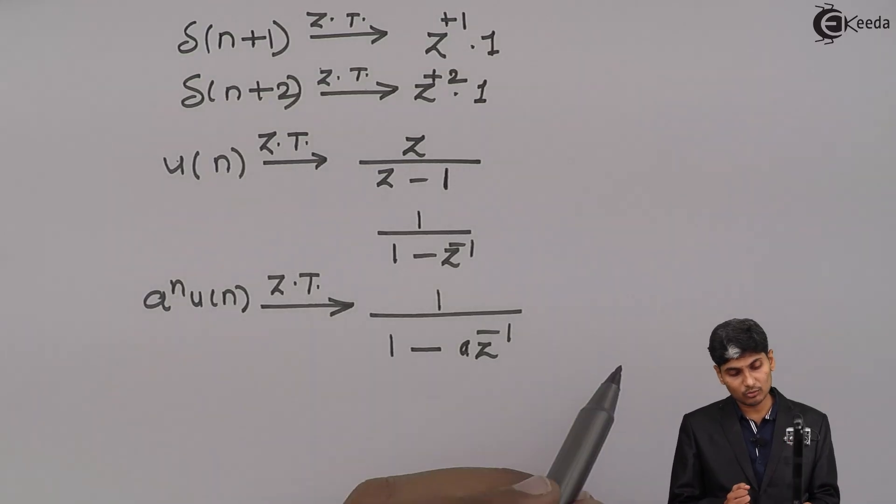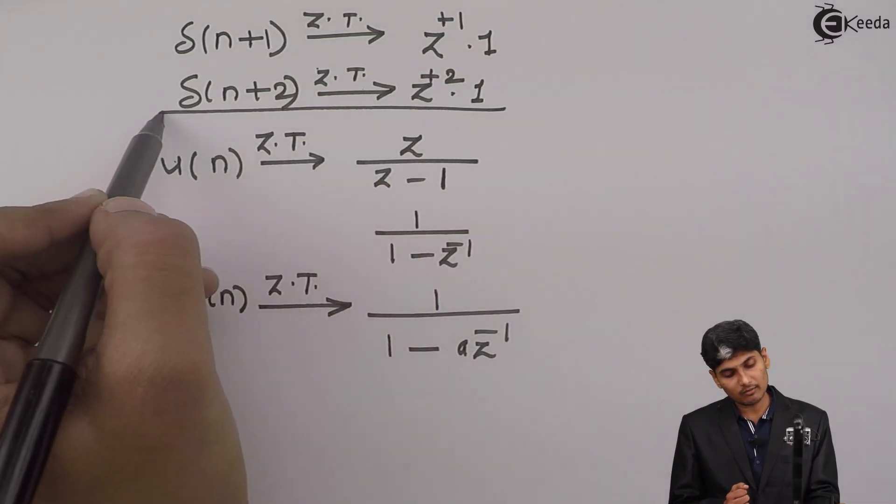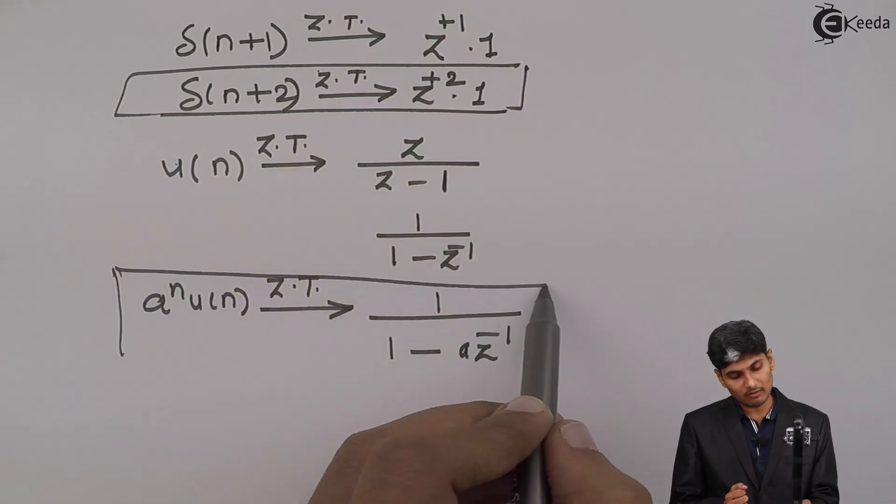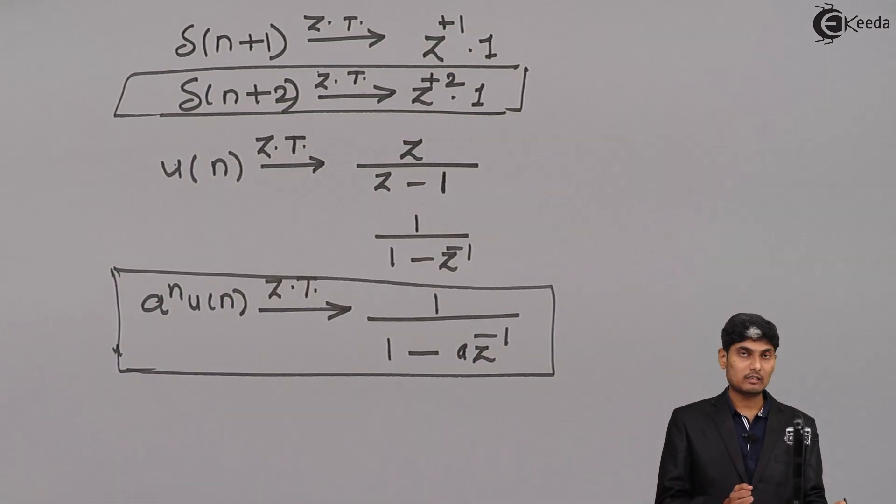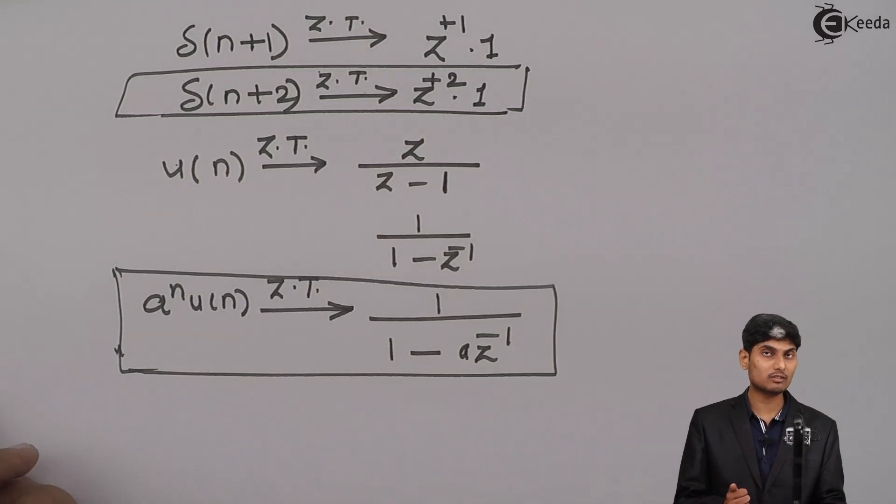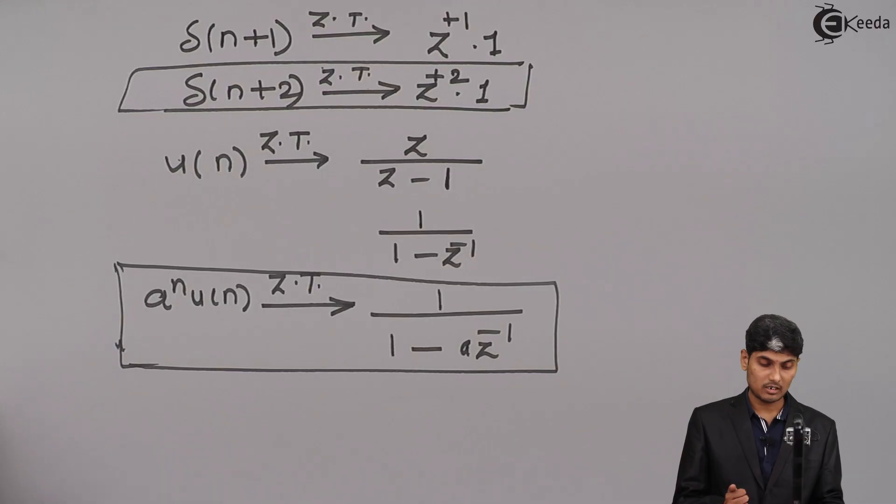We will be primarily using the delaying and advancing process, and we will always be using this formula. These are the two basic formulas of Z transforms that we will be using very often in our systems.